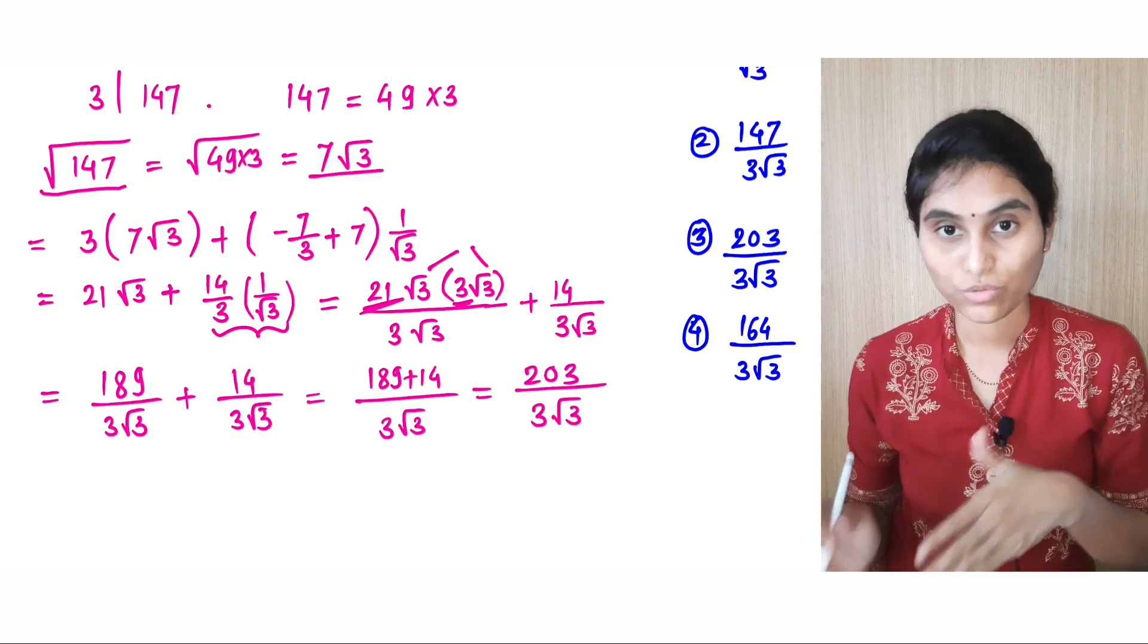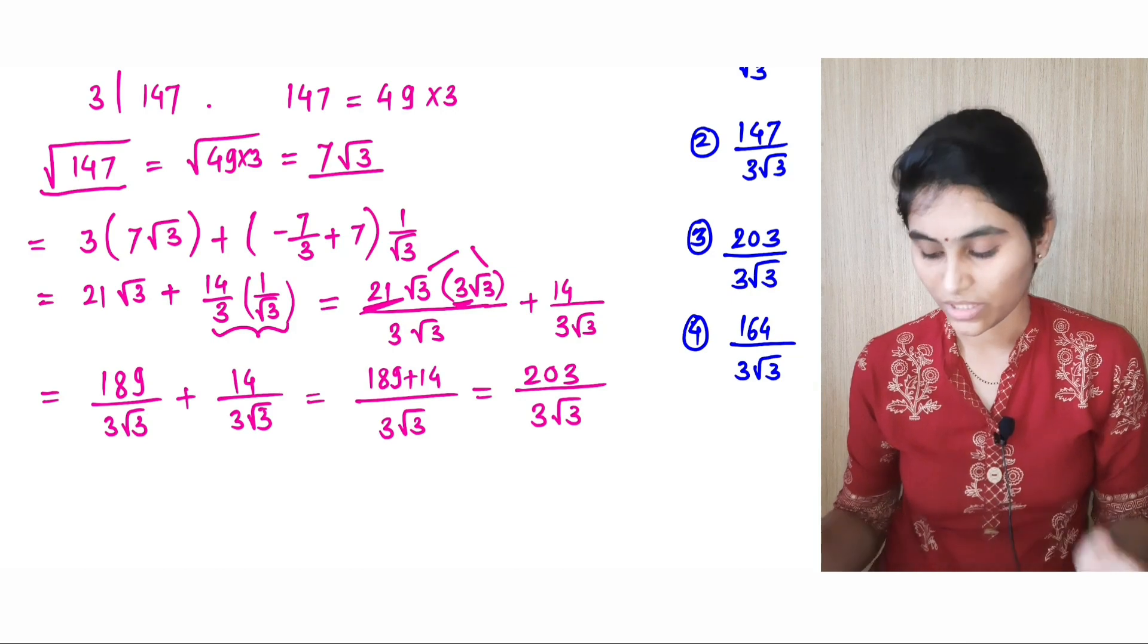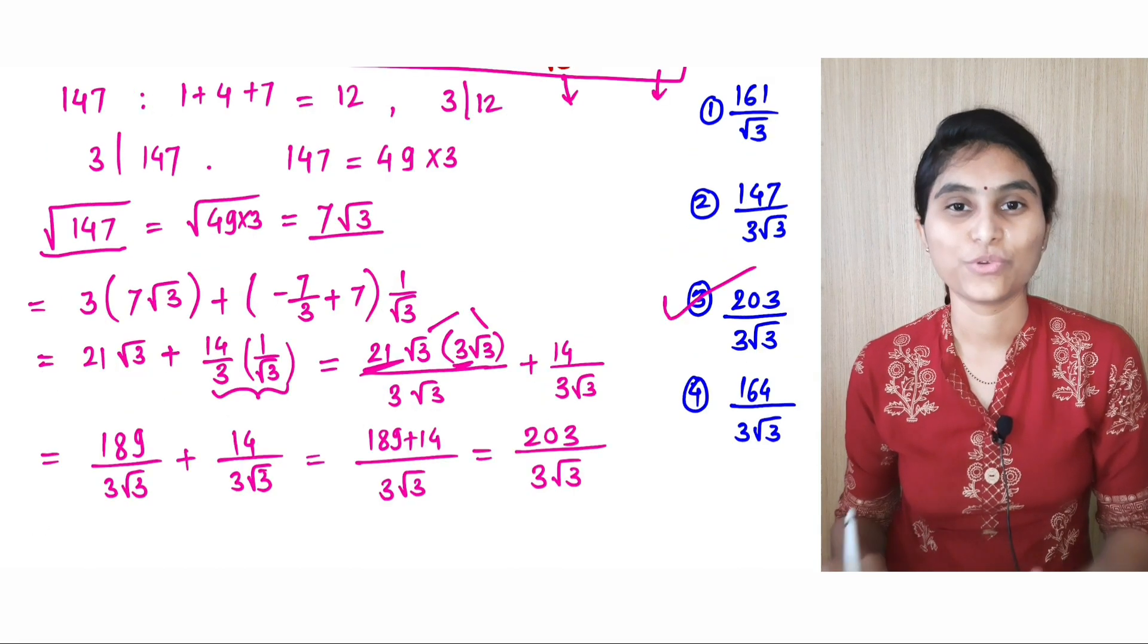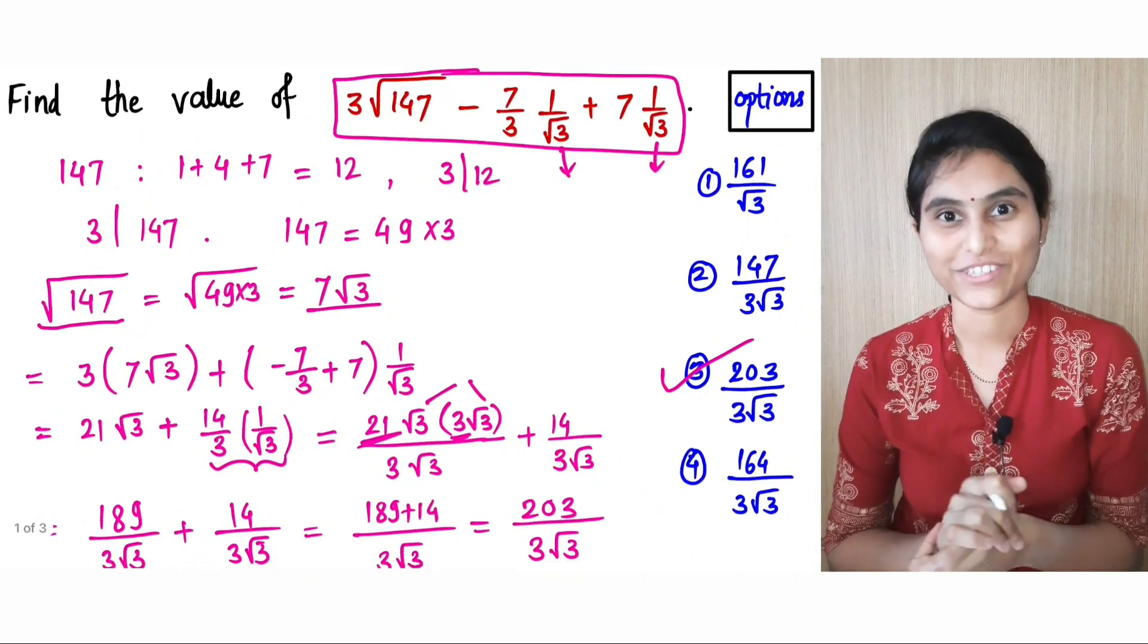So the answer is 203 divided by 3 times root 3, and hence this third option is the correct option. I hope you find this useful. Thank you for watching.